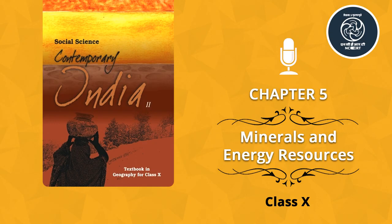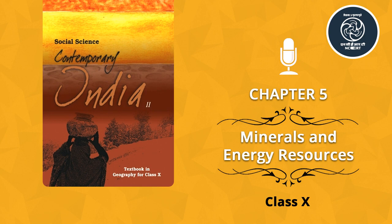Mica deposits are found on the northern edge of the Chota Nagpur Plateau. The Koderma-Gaya-Hazaribagh belt of Jharkhand is the leading producer. In Rajasthan, the major mica-producing area is around Ajmer. The Nellore mica belt of Andhra Pradesh is also an important producer. Rock minerals — Limestone: Limestone is found in association with rocks composed of calcium carbonate or calcium and magnesium carbonates, found in sedimentary rocks of most geological formations. Limestone is the basic raw material for the cement industry and essential for smelting iron ore in the blast furnace. A pie diagram shows Andhra Pradesh contributing 16%, Madhya Pradesh 15%, Rajasthan 15%, Gujarat 11%, Tamil Nadu 9%, and others 34%.